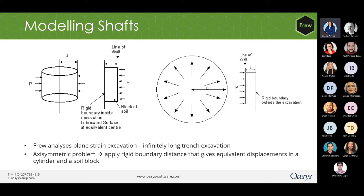FRU also facilitates analysis of plane strain excavation — that is, infinitely long trenches — or shafts, which is an axi-symmetric case. If you consider a cylinder of soil with radius A inside a circular excavation, assuming that Young's modulus is not varying with depth and it is an excavation of large depth, the soil stiffness inside the circular excavation and outside can be calculated. The displacements for a cylinder and a block are equated and the distance of the rigid boundary T is calculated and applied to the analysis. Details are available in the manual. It is also worth mentioning that the axi-symmetric analysis results need to be validated by FE analysis.